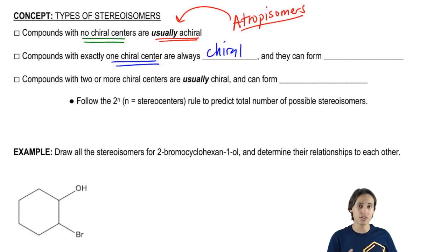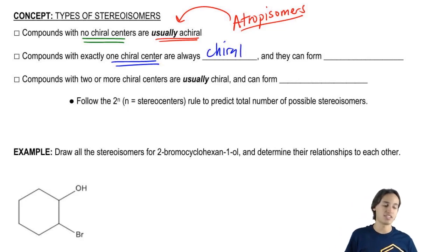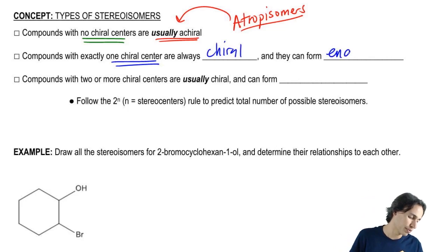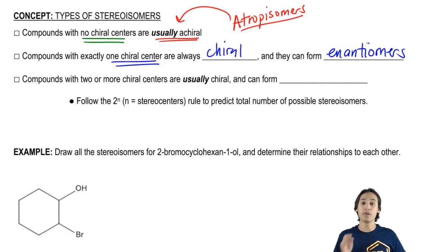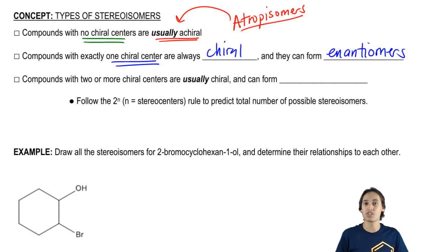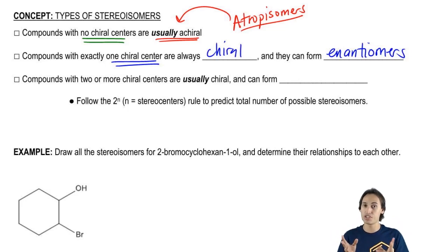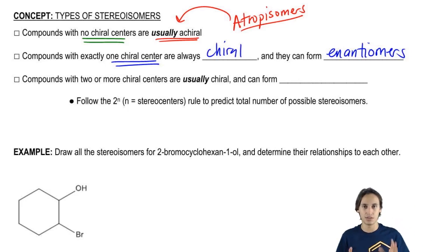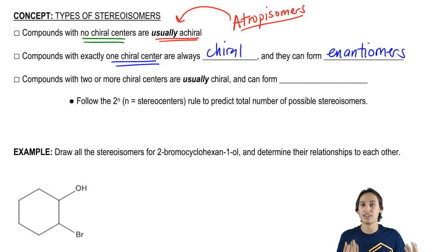Since it has one chiral center, that means it's going to be able to form enantiomers. Remember what enantiomers were? They were the mirror images that you would get that were different from the original. If you have one chiral center, it can arrange itself in two different ways — a right-handed way and a left-handed way. So if you put it up to a mirror, you are going to get the enantiomers.